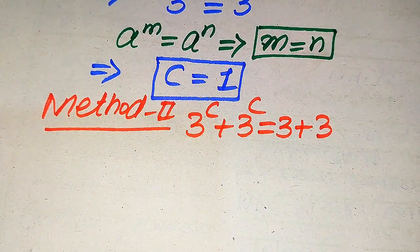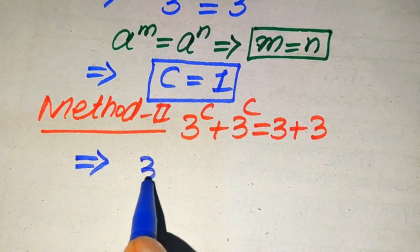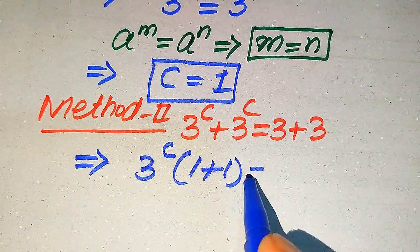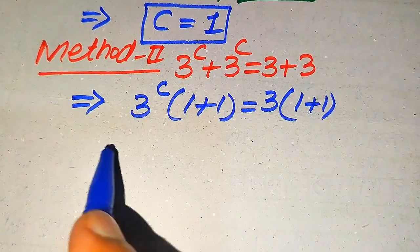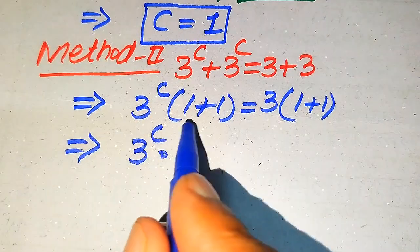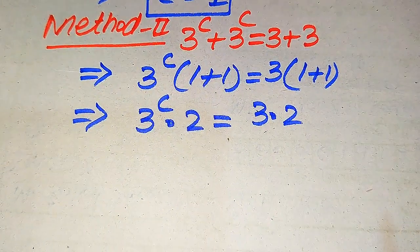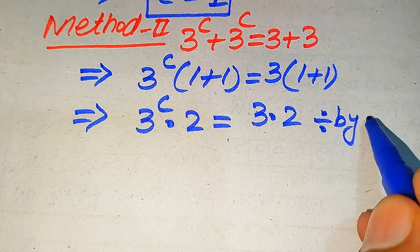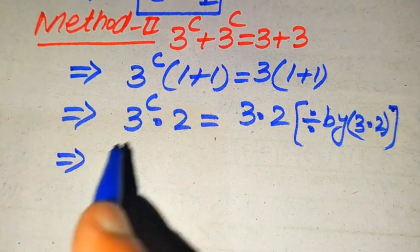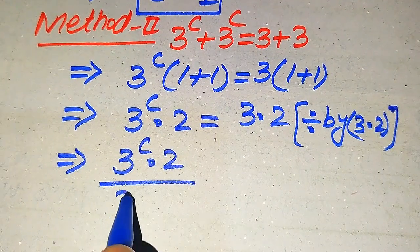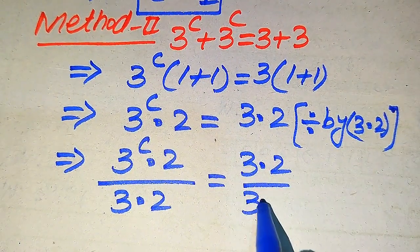In the second method, when you take 3 to the power of C as common from the left hand side, you get 3 to the power of C times 1 plus 1. Similarly, on the right hand side, when you take common 3, you get 3 times 1 plus 1. In the next step, 1 plus 1 becomes 2, so we have 3 to the power of C times 2 equals 3 times 2. Now we divide both sides by 3 multiplied by 2, giving 3 to the power of C times 2 divided by 3 times 2 on the left, and 3 times 2 divided by 3 times 2 on the right.